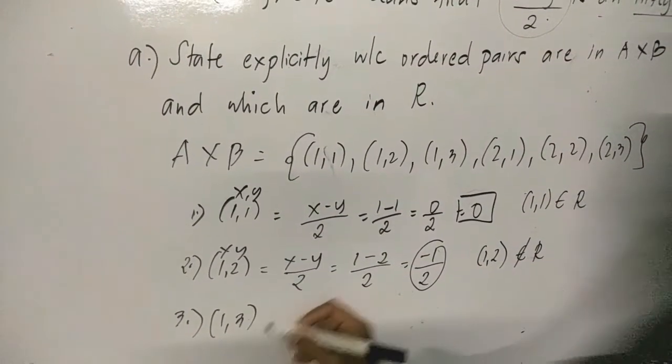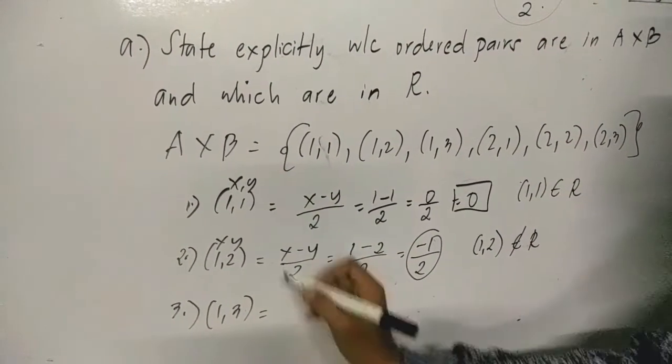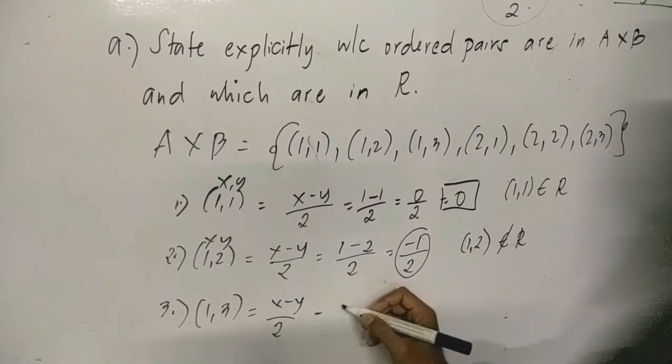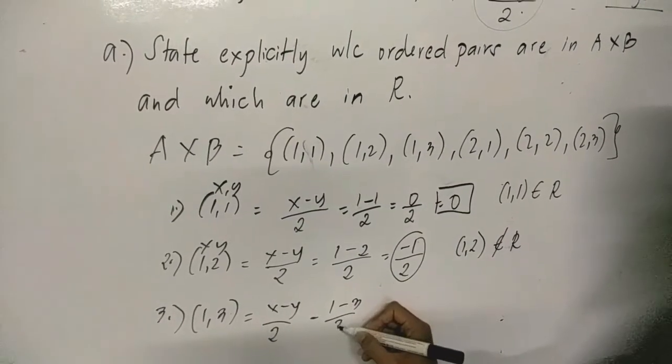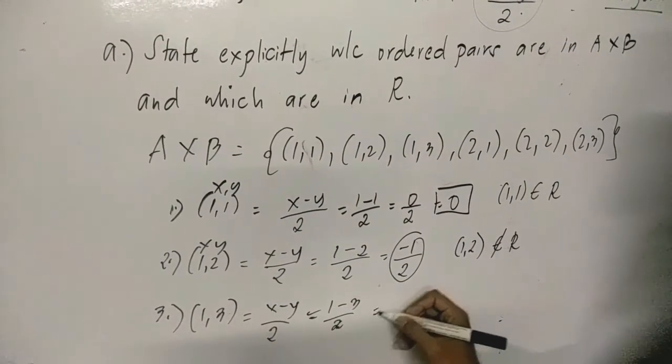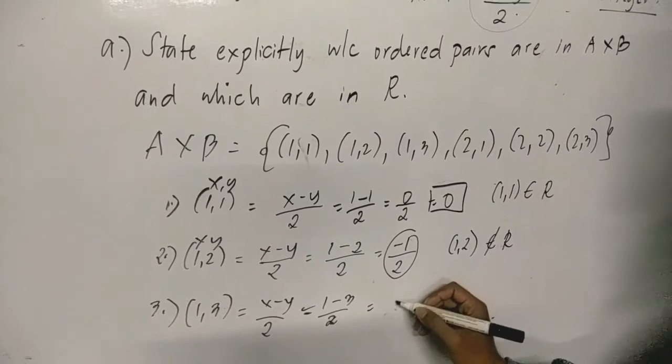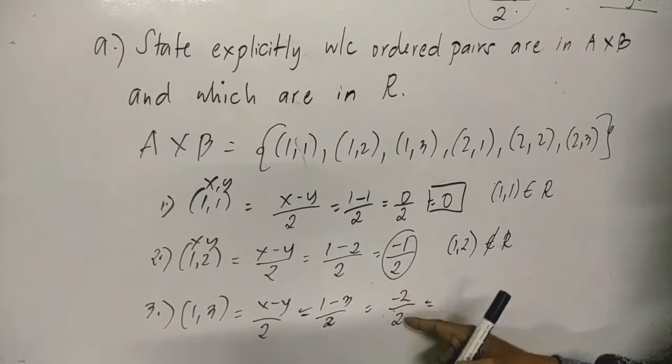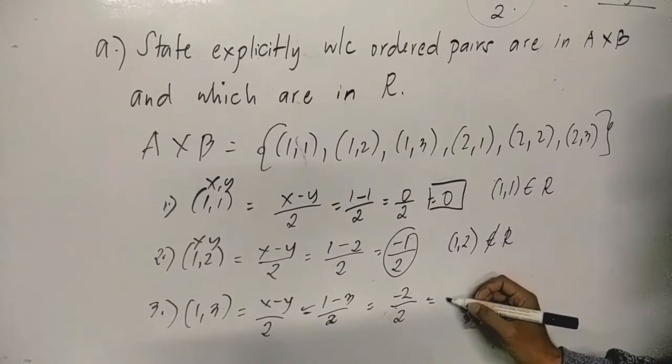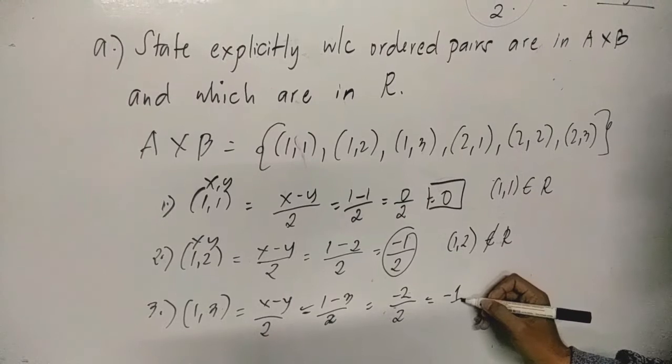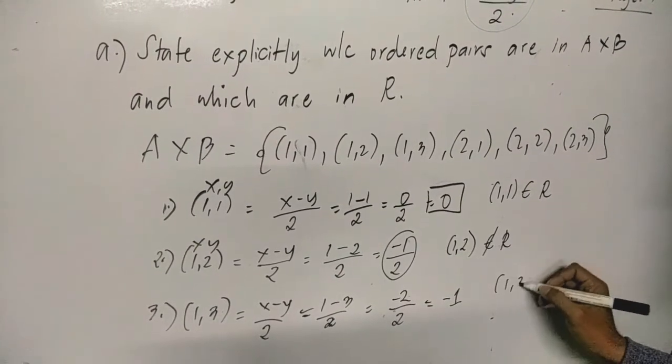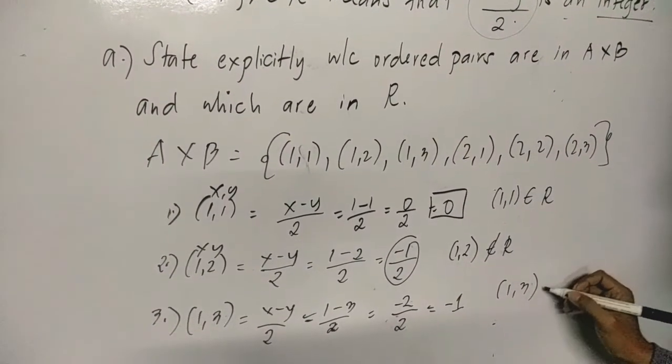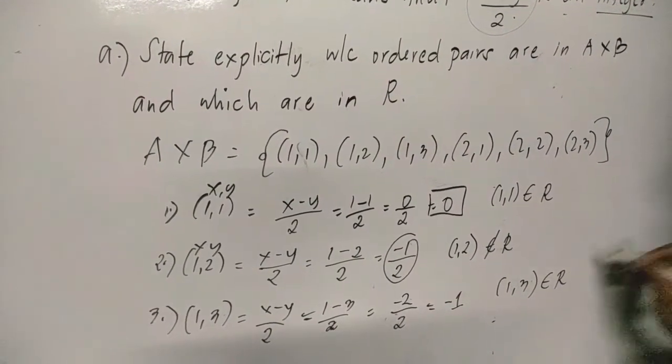Next, number 3: (1,3). Again, (x - y)/2. Substituting: (1 - 3)/2 = -2/2 = -1. So negative 1 is an integer. Therefore (1,3) is an element of R.